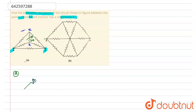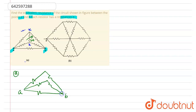Now the circuit will be like this, with A and B and another resistance here. You can see that there are resistances R, R, R, R and R. These two resistances are in series combination, so it becomes 2R.